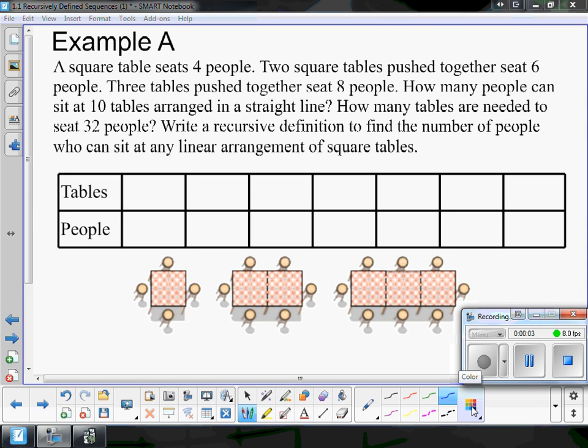Hi class, this is example A from page one in our unit one white packet. It talks about a square table seating four people, so that would be this table right here.